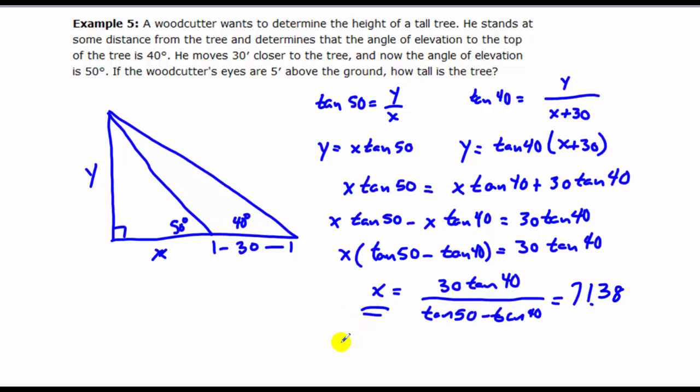Now, once again, that's the x value, and I'm looking for the y value. So I know y equals x tan 50. So if I take 71.38 and multiply it by tan 50, I get roughly 85.07, and that is my y value.